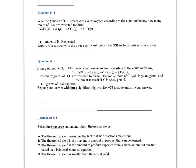Question four. When 10.5 moles of C2H6 react with excess oxygen according to the equation — 2 moles of C2H6 plus 7 moles of O2 gas yield 4 moles of CO2 gas plus 6 moles of H2O gas — how many moles of H2O are expected to form? Report your answer with three significant figures. Do not include units. The answer is 31.5 moles of H2O.